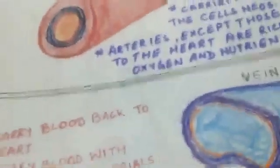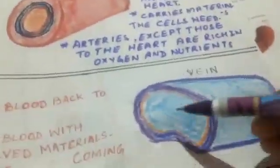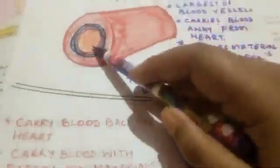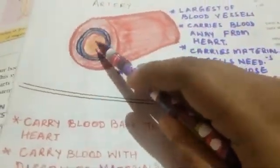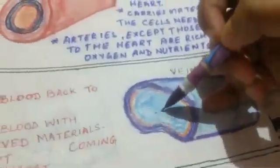You can see here that the lumen of the vein is thicker than the lumen of the artery — the artery's lumen is smaller while the vein's is bigger.